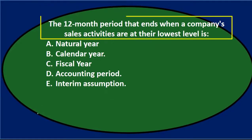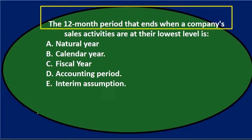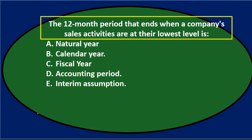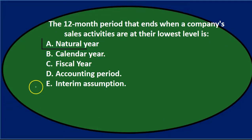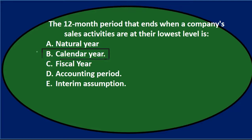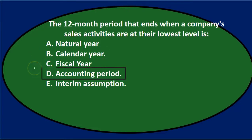Next question: the 12-month period that ends when a company's sales activities are at their lowest level is: A, natural year; B, calendar year; C, fiscal year; D, accounting period; and E, interim assumption.